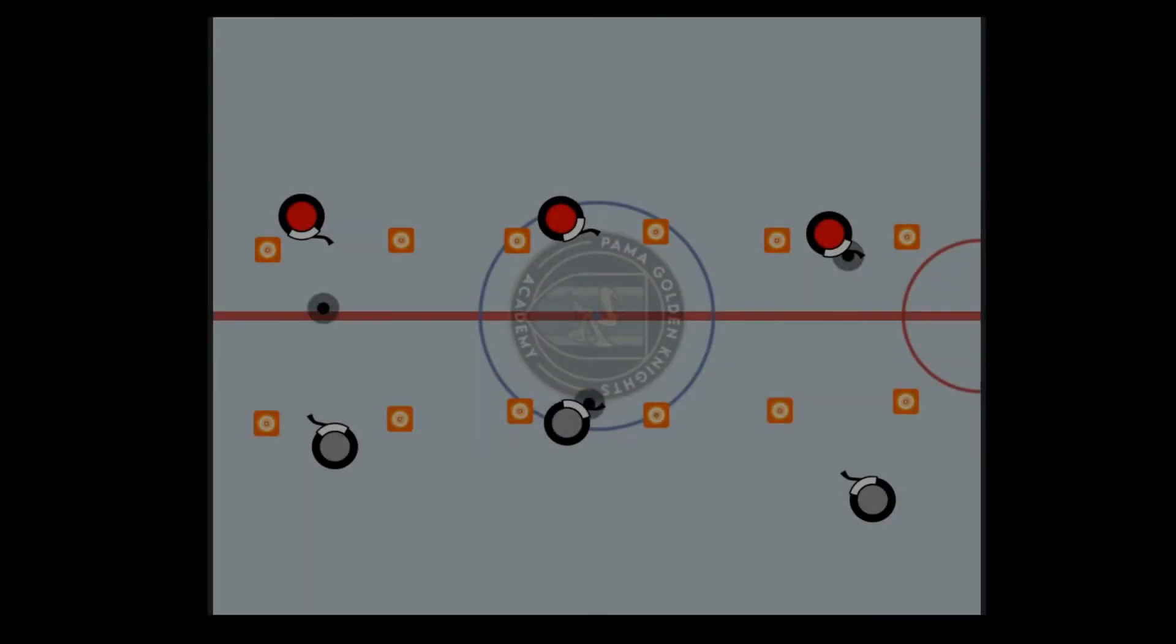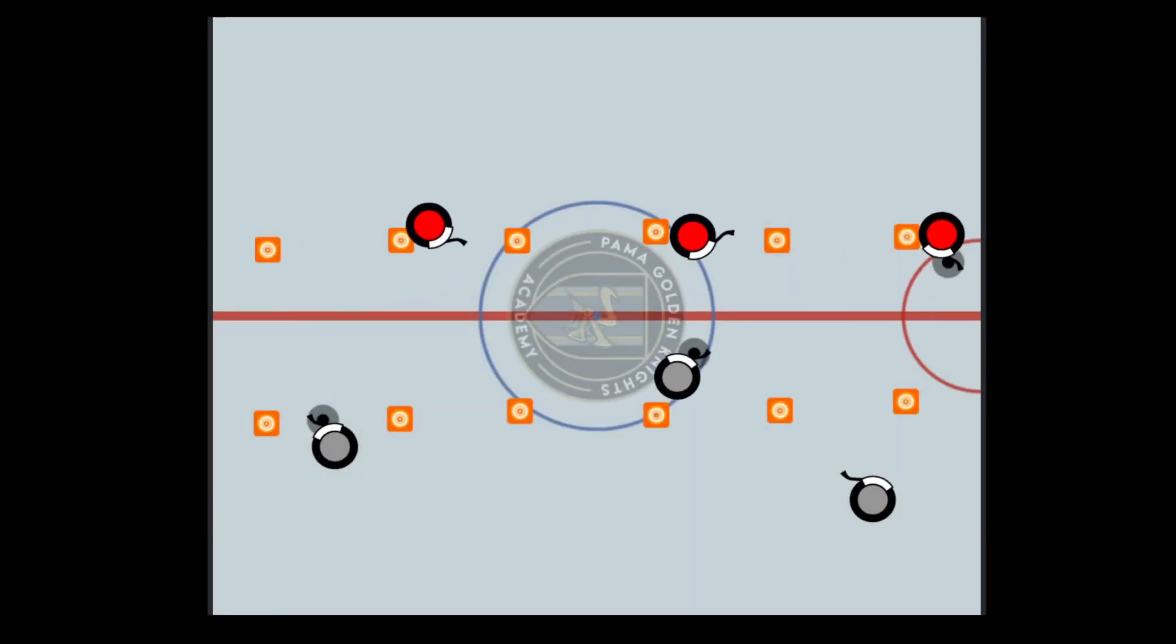Variation 3: One player is skating around the pylons and receives the pass when he pivots backwards. He then continues to skate backwards with the puck around the pylons before he passes it back.